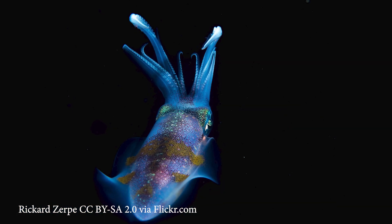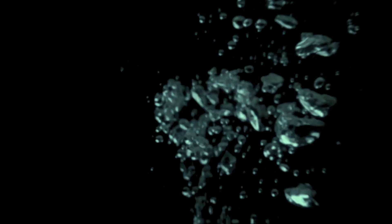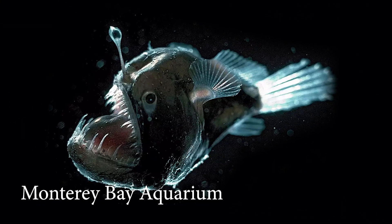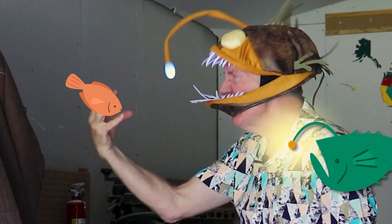There's squid that are like light shows running across their back. Kind of my favorite is way deep down in the ocean, there is this fish called the angler fish. And on its head is a light bulb. And when a little fish comes over to eat it,